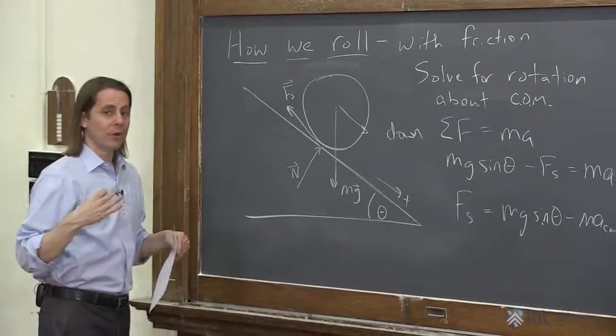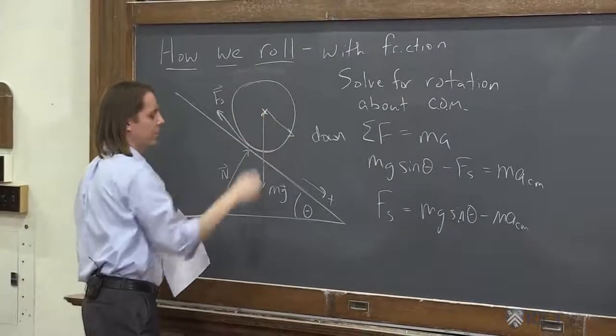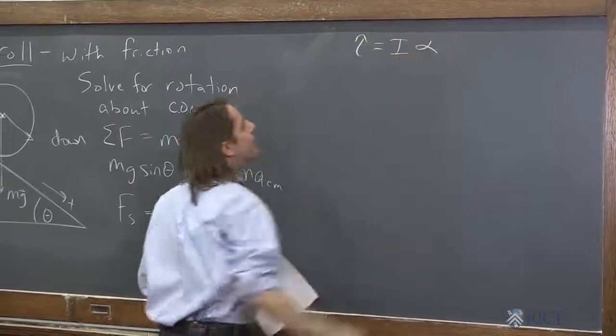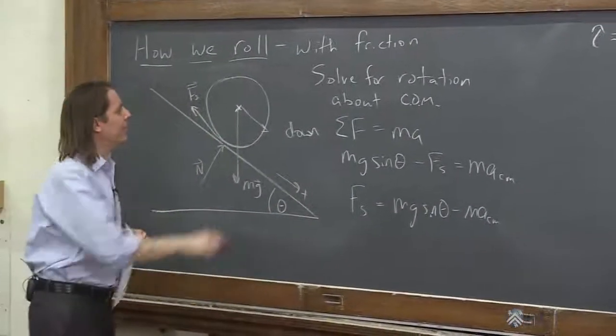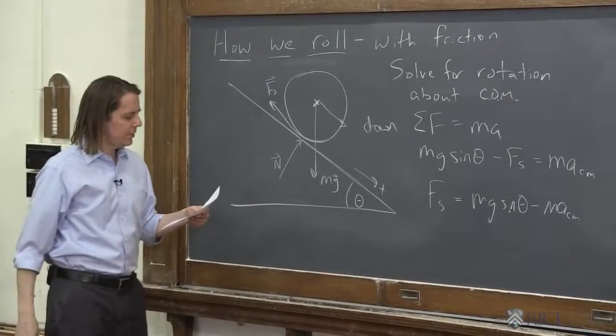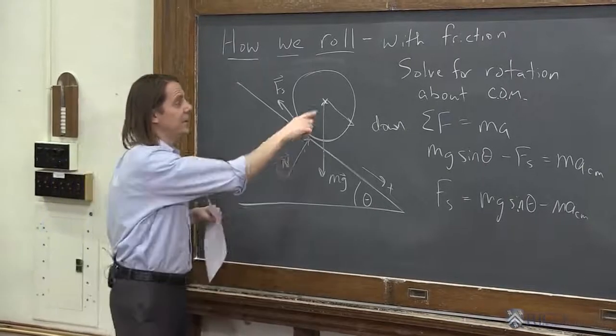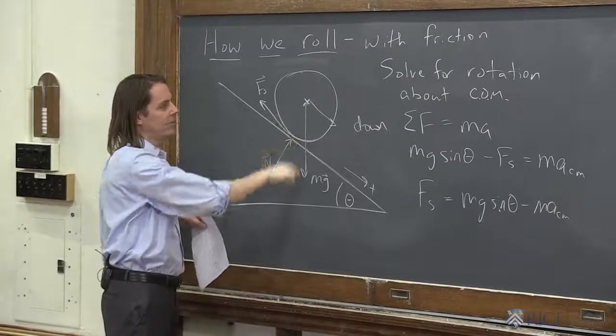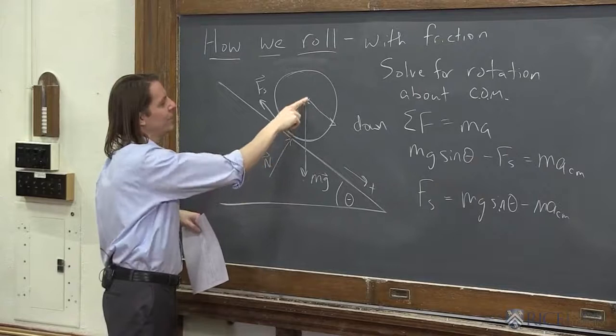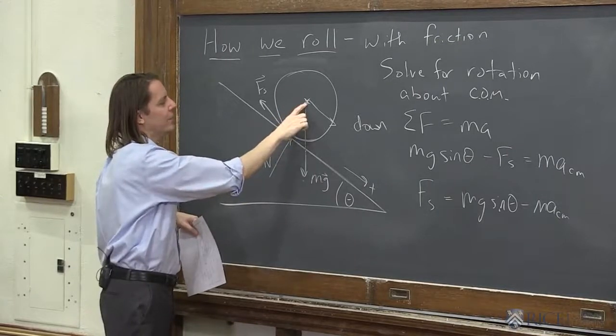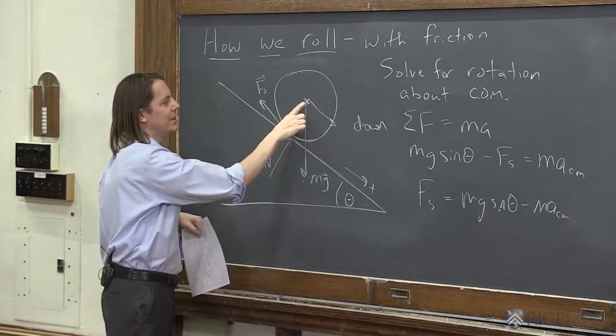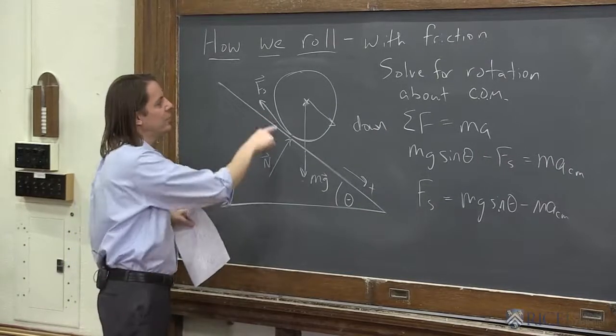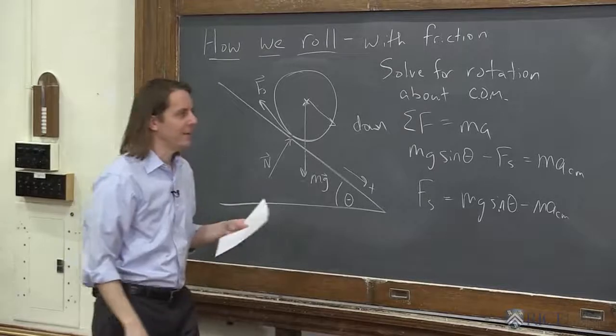And now we're going to do Newton's second law for rotations around the center of the cylinder. Torque, sum of the torques is I alpha. So now about this axis, who all is making a torque? mg is no longer making a torque because the distance from the axis to where the force is applied is zero. So no torque from mg. The normal force is not making a torque. The r vector has a length from the edge to the center, but the angle between the normal force and the r vector is zero, so the cross product is zero. So in this case the only one that has an actual torque is the friction force fs.